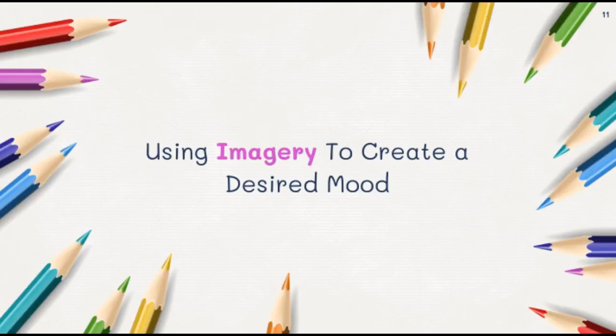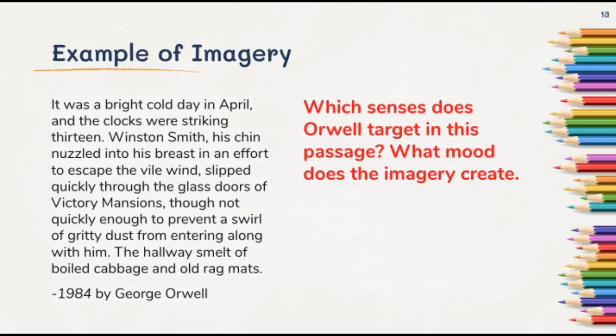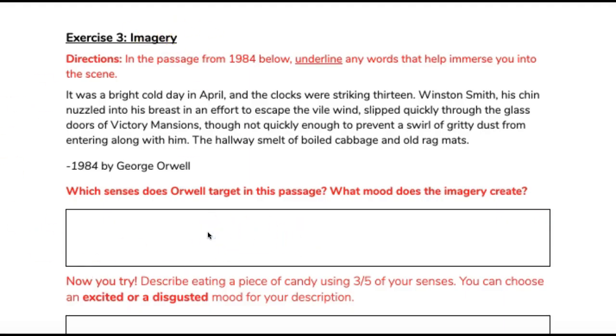The final strategy we're going over today is using imagery to create a desired mood. Imagery relies on the senses: what you see, feel, hear, smell, and taste. Here's an example from 1984: 'It was a bright cold day in April, and the clocks were striking 13. Winston Smith, his chin nuzzled into his breast in an effort to escape the vile wind, slipped quickly through the glass doors of Victory Mansions, though not quickly enough to prevent a swirl of gritty dust from entering along with him. The hallway smelt of boiled cabbage and old rag mats.' The question on your handout asks: which senses does Orwell target, and what mood does the imagery create?